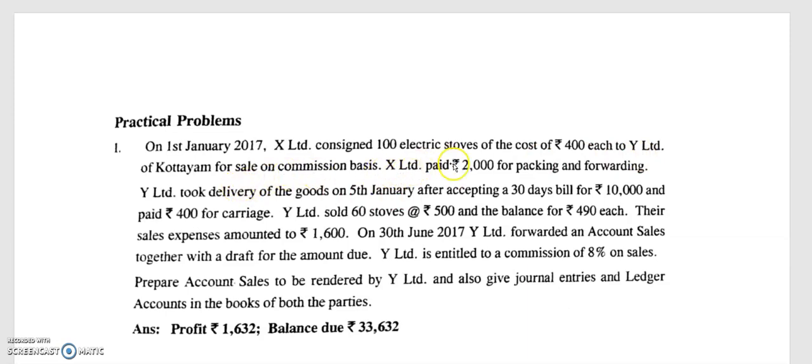X Limited paid ₹2,000 for packaging and forwarding — that is a consignor expense. Y Limited took delivery of goods on 5th January after accepting a 30-day bill. The advance was ₹10,000 and Y Limited paid ₹4,000 for carriage. These are recorded as consignee expenses.